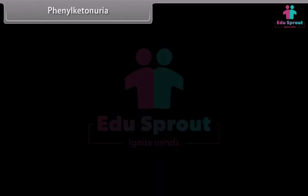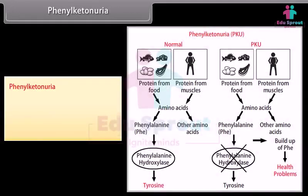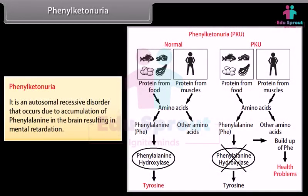Phenylketonuria is an autosomal recessive disorder that occurs due to accumulation of phenylalanine in the brain, resulting in mental retardation.